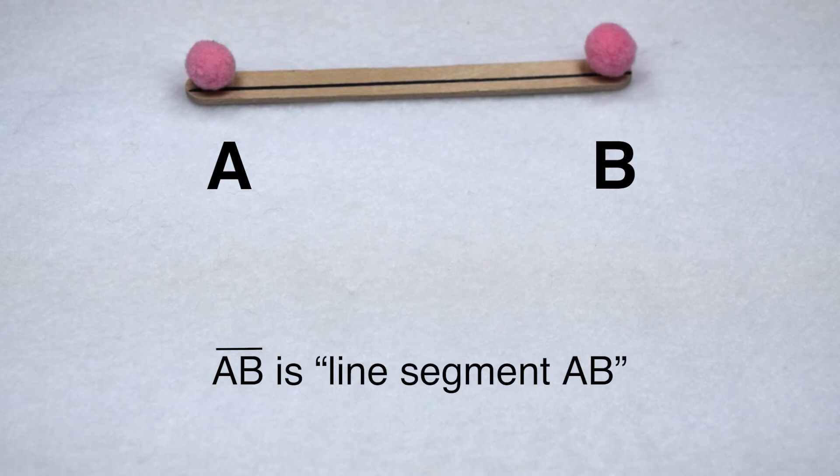In order to differentiate it from a line when writing it, we would put a line segment over the name instead of a line symbol.